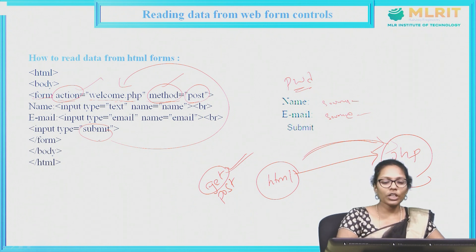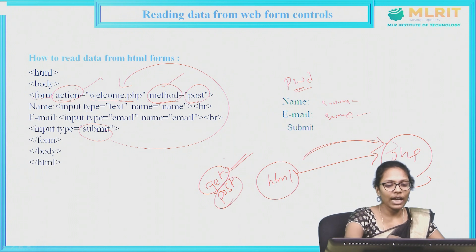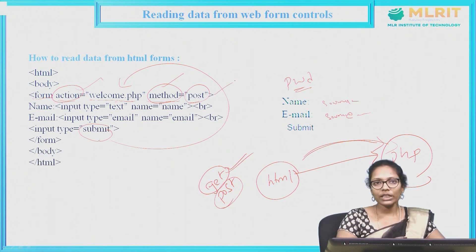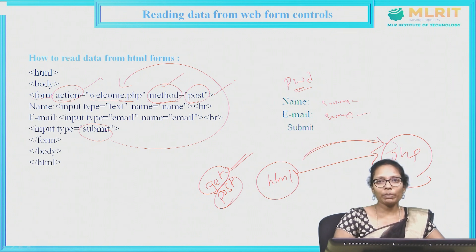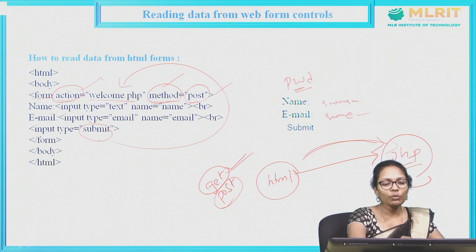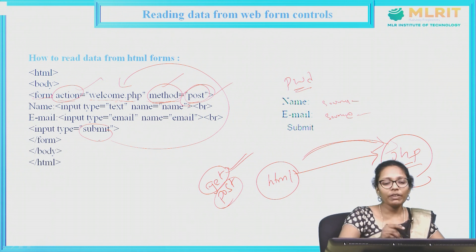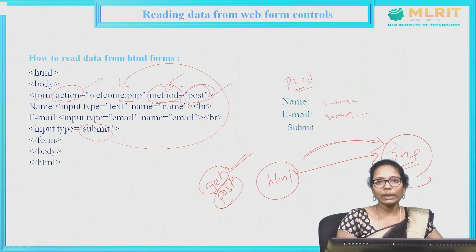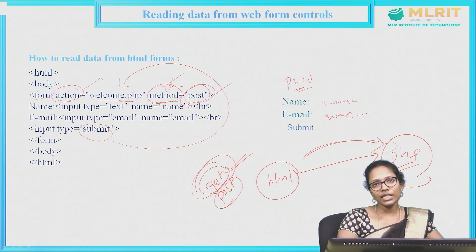If you want to secure your data, you should use the method as POST. In the POST method, whatever data you fill in the form, the data will be encrypted and the encrypted data will be sent to the PHP file. That is why you should mention the method as POST if you want to secure your data. If you do not write any method attribute in the form, then by default the method will be considered as GET.